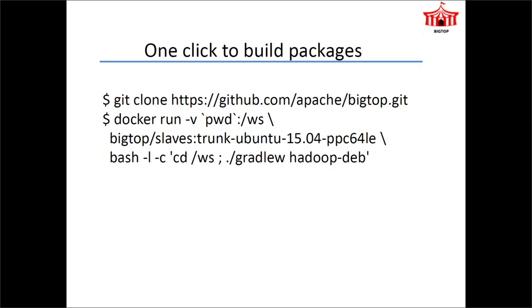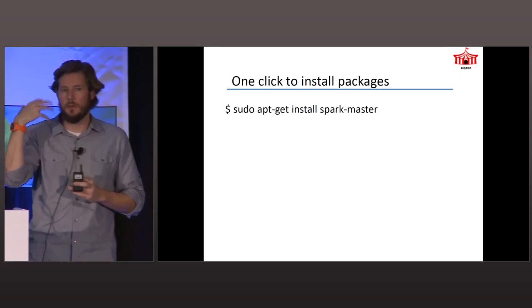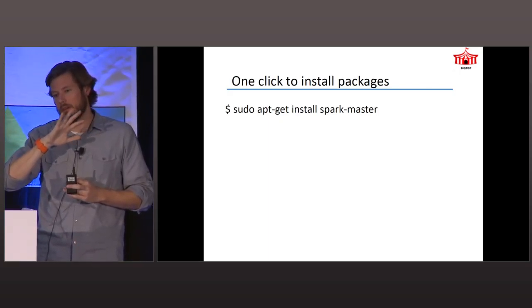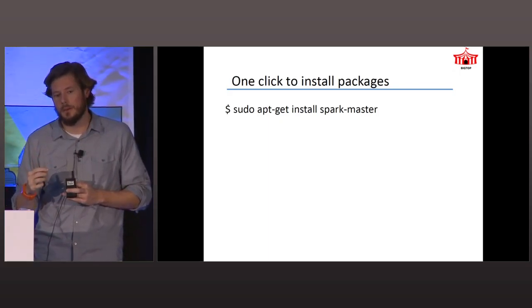Basically two steps to get your environment set up: clone, and then run the container — assuming Docker is running functionally. At the end of the day, what Big Top wants to do by default is let you tell it to build the whole kitchen sink, so you can say just build everything for me, and that would be the default.